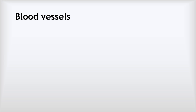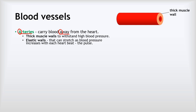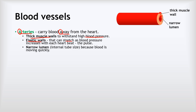The next thing to look at is the structure of the different kinds of blood vessels. The first kind is arteries, whose role is to carry blood away from the heart — remember this by putting the A in arteries with the A in away. They have thick muscle walls to withstand the high blood pressure of blood being pumped from the heart. They also have elastic walls that stretch as blood pressure increases with each heartbeat — this is what we feel as the pulse. Lastly, they have a narrow lumen because blood is moving quickly.